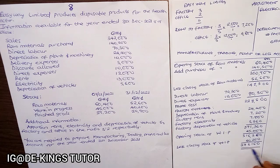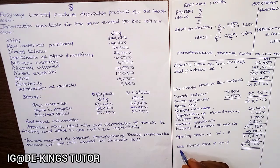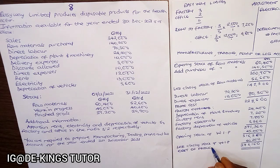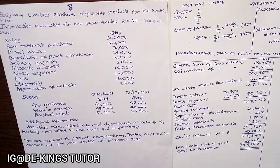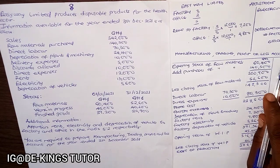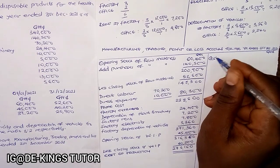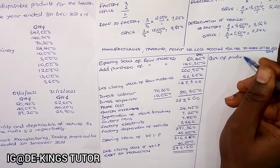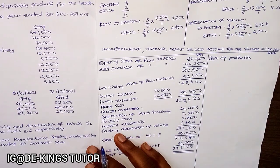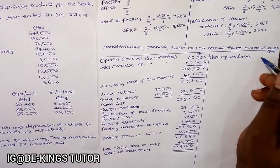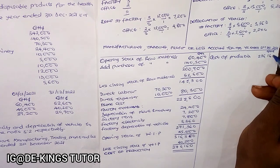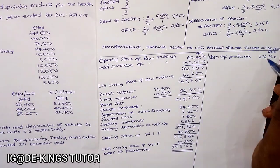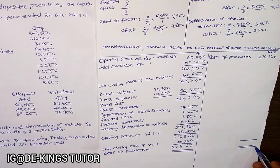Deducting closing work in progress of 40,700 from 317,160 gives us 276,160. This is what we call the cost of production — 276,160 — and this amount is also posted into the trading account as the cost of production.